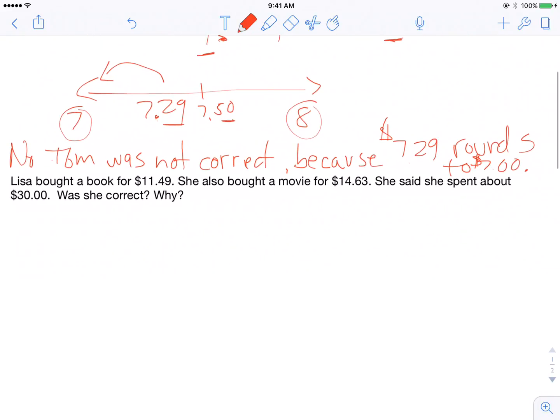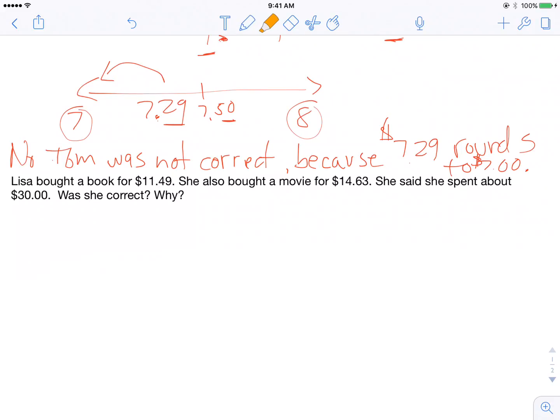Now let's look down here at the Lisa example. This one's a little bit different. Lisa bought a book for $11.49. She also bought a movie for $14.63. She said she spent about $30. Was she correct? Why?